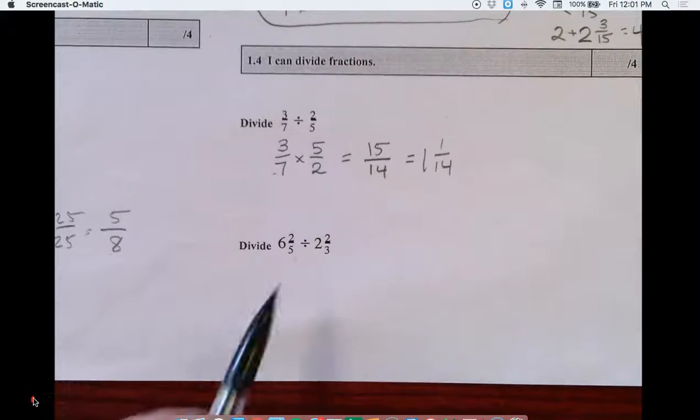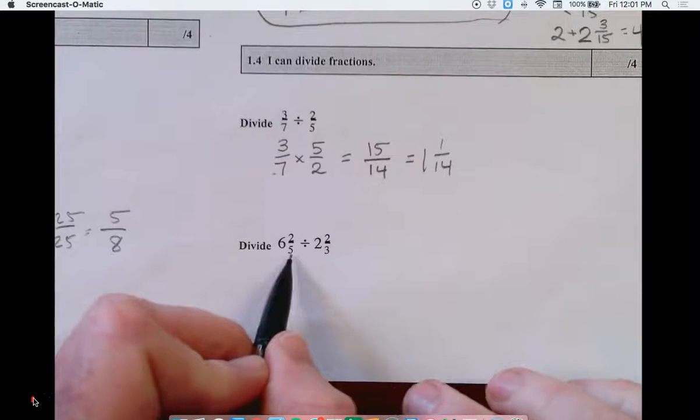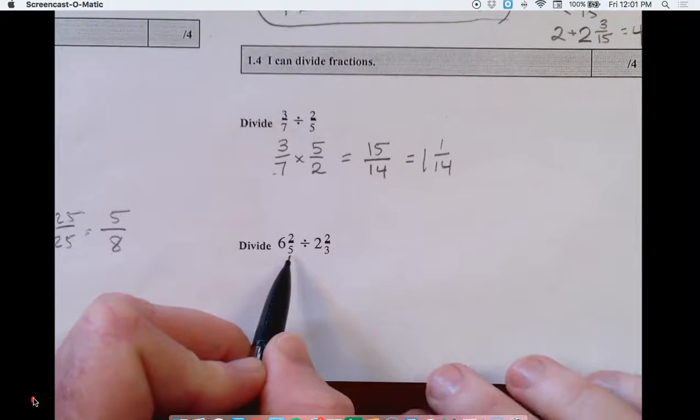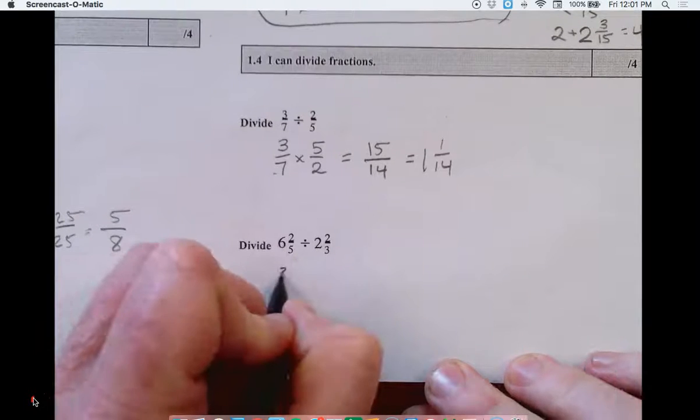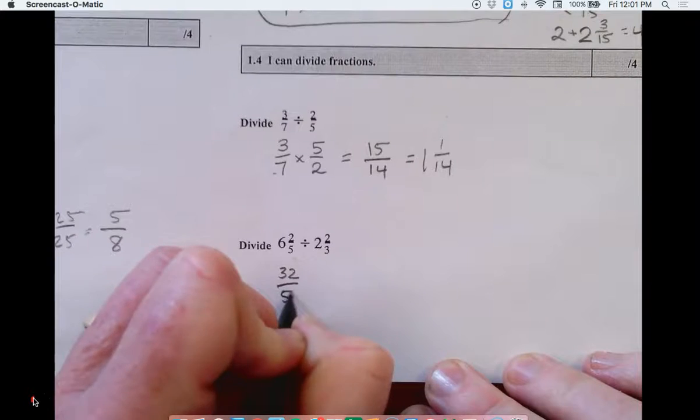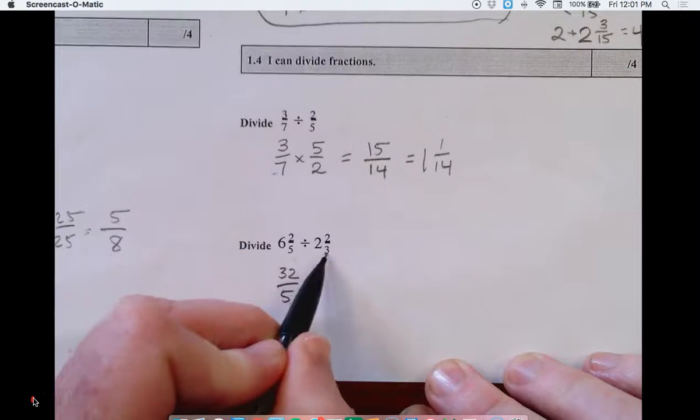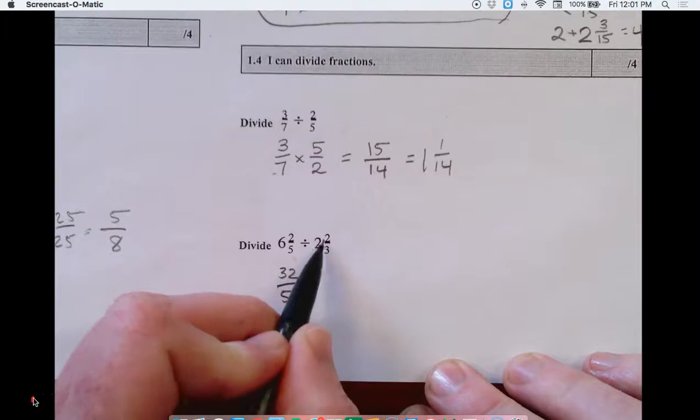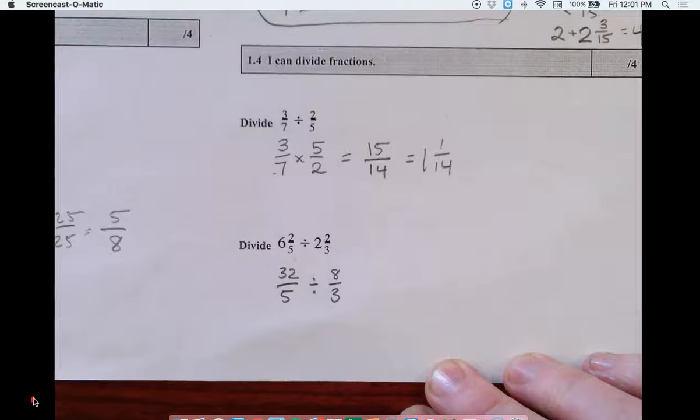Okay, now this problem, I really think the best thing to do is to convert these into improper fractions first. So five times six is 30, plus two. Still division. Three times two is six, plus two is eight.